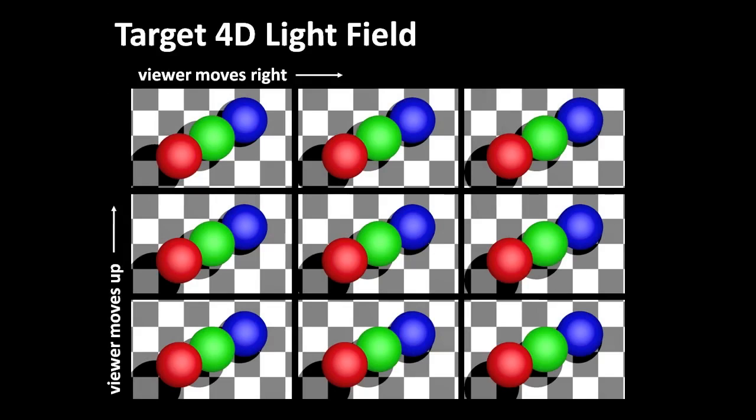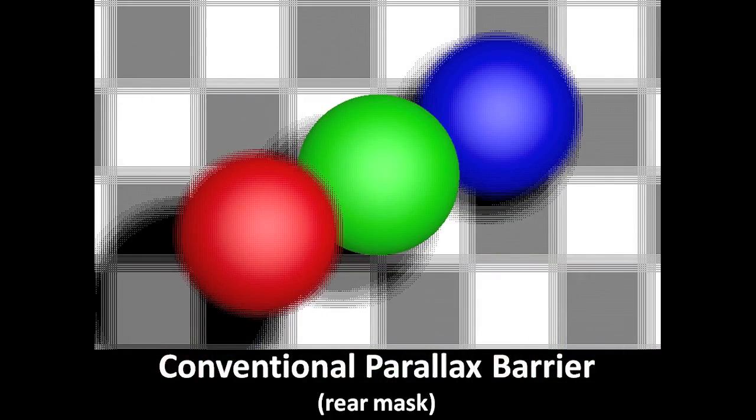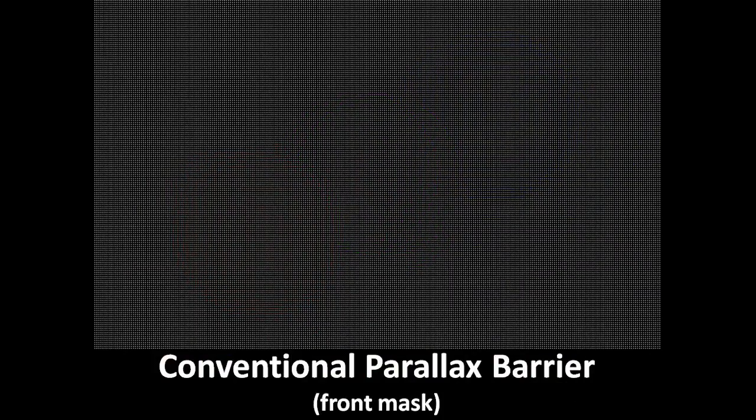Dual stacked LCDs allow light field display. Here, we show a conventional parallax barrier. Note that the front mask containing a pinhole array significantly reduces brightness.